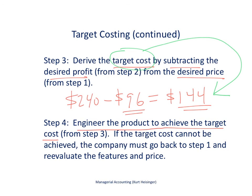If for some reason we can't achieve the target cost, then we start over. We go back to step one and reevaluate the features and the price, and determine whether this product is viable or not.